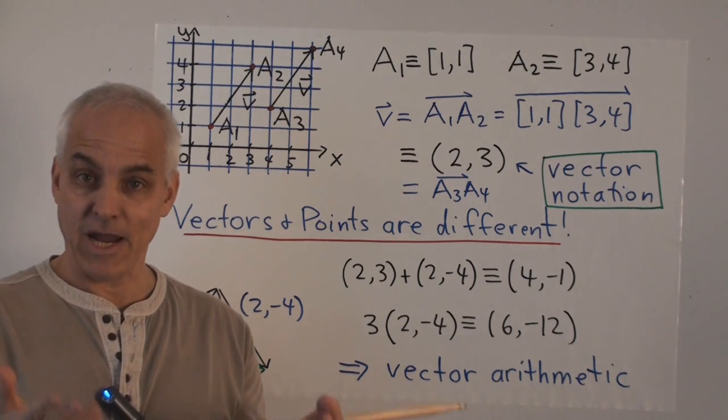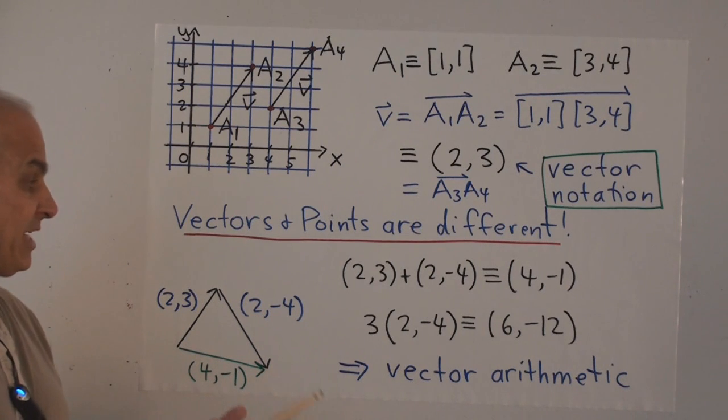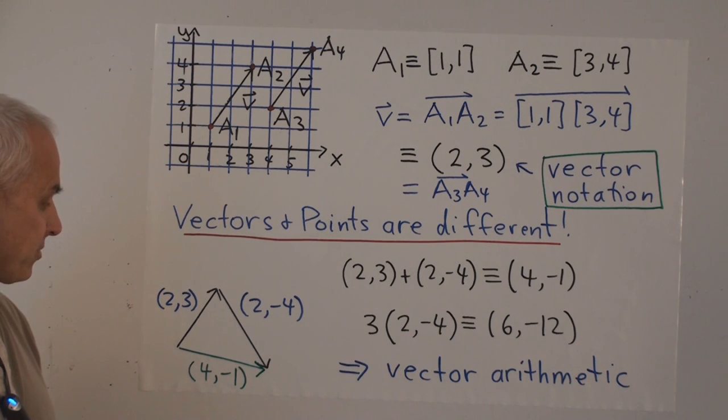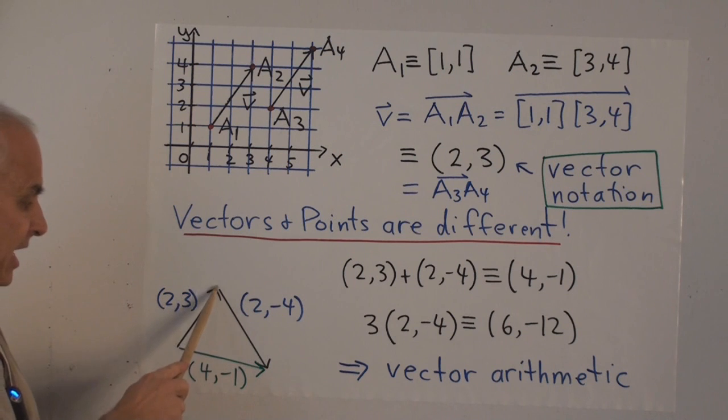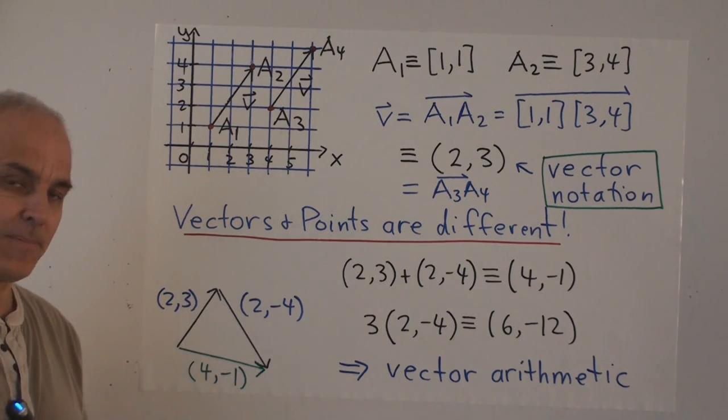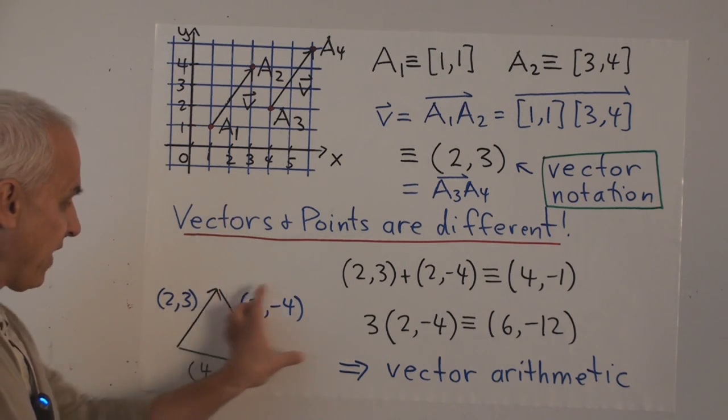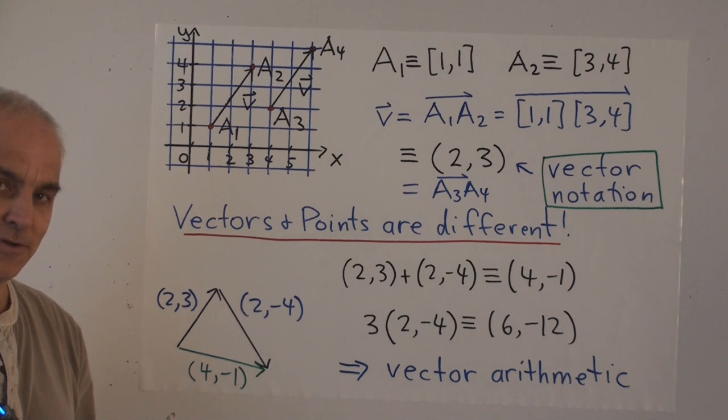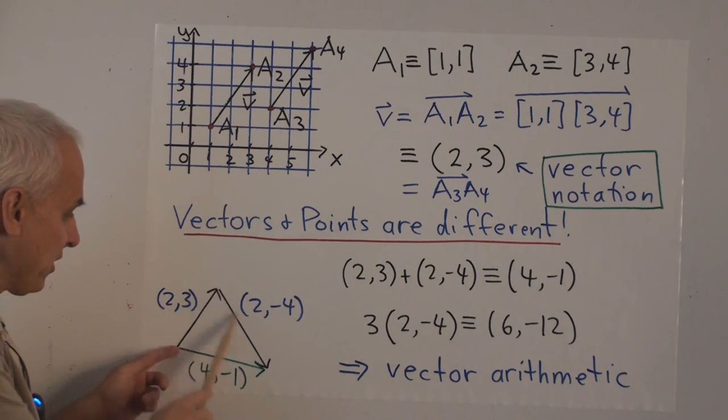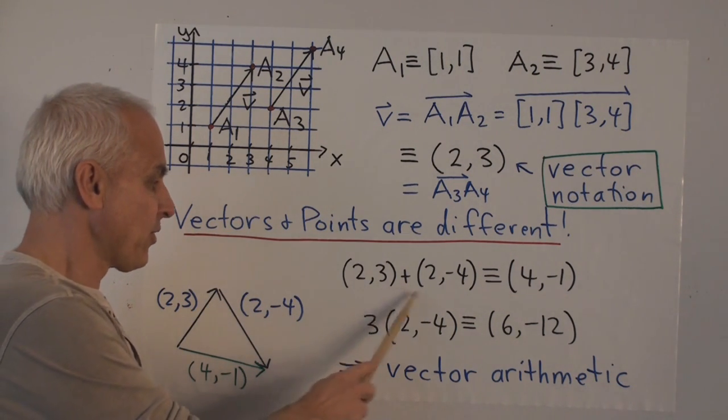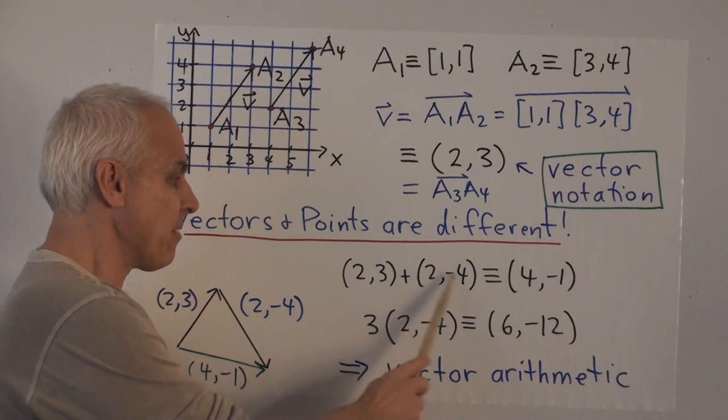They also are quite different arithmetically. Because there's things that we can do with vectors that we can't do with points. For example, we can add two vectors. Here's a vector 2,3. Here is a vector 2, minus 4. If we put this vector on the page, and then we translate the second vector so that its tail is at the head of the first vector, then that cumulative path determines another third vector. The one from here to here. So we add the two vectors, 2,3, plus 2, minus 4, just by adding the components.